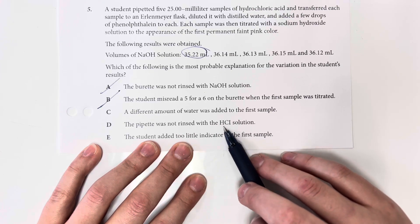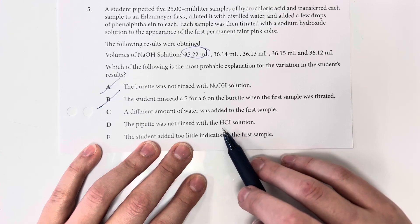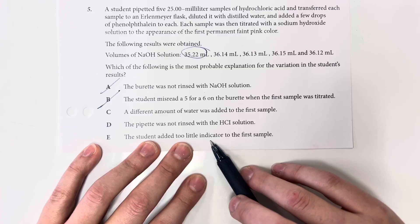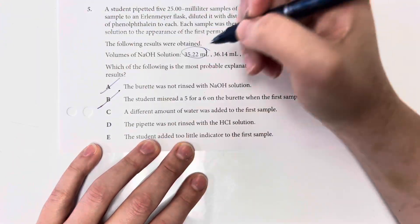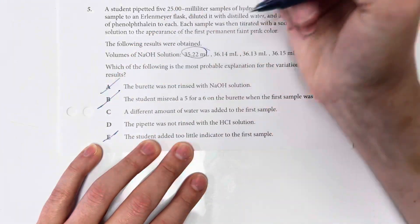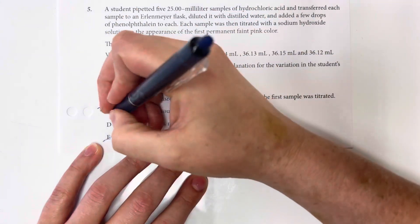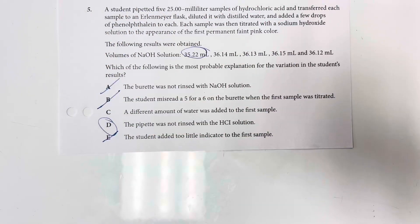That is a good possible solution, because that could mean that there was distilled water. There was something in there that lowered the molarity of the hydrochloric acid. And the student added too little indicator to the first sample. Again, that's not necessarily going to lower the molarity of my hydrochloric acid. So option choice D is going to be my best choice there.